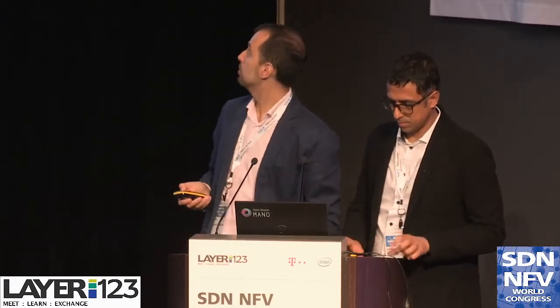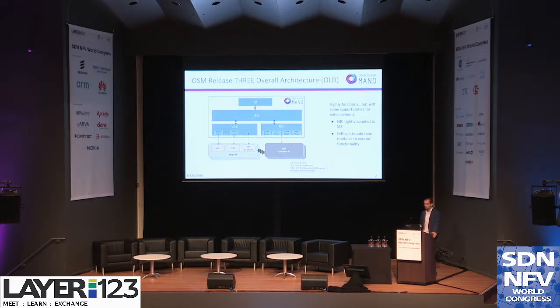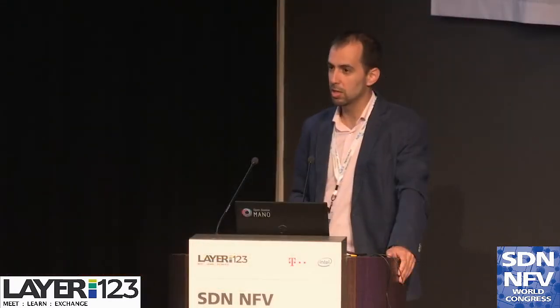This was the release tree architecture that was functional, but it had some inconveniences. The first one is that the northbound interface of the system was tightly coupled to the service orchestration — the SO component — meaning that almost any interaction that happened in the system needed to go through that service orchestrator. This made the development of new features very complex, because any new feature had to go through that service orchestrator to be implemented.